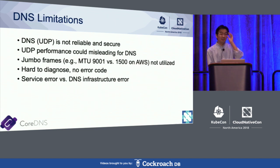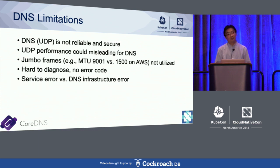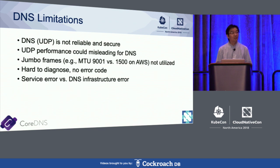There are also limitations for DNS to be used in service discovery. First, DNS uses UDP, and UDP is connectionless, so DNS is not reliable. DNS is also not secure because encryption is rarely used in any configuration for DNS. The UDP overall performance could be better than TCP, but this is actually misleading for DNS. The reason is that DNS typically has a very small packet size in the scale of 100 to 200 bytes.